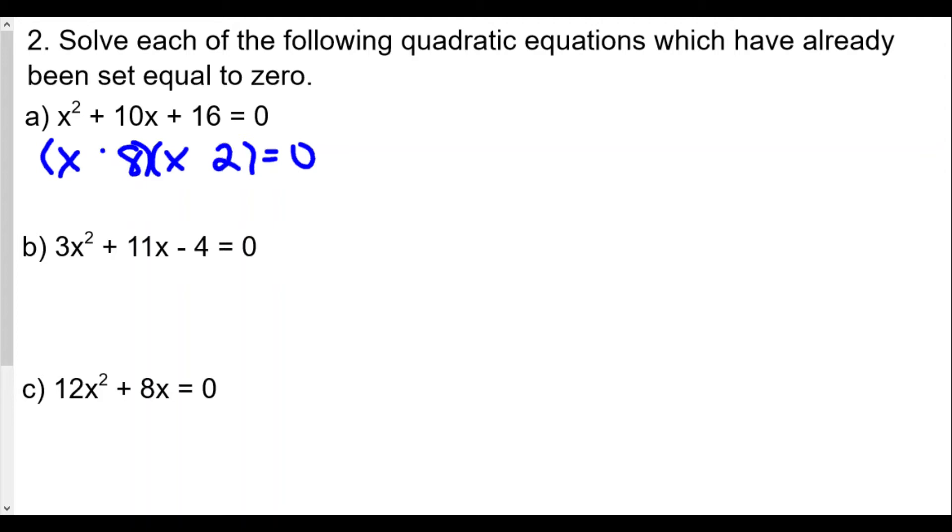In this case, the large number gets a plus sign, we want a positive 16, so that's plus as well. So we now factor and we get x plus 8 times x plus 2 equals 0.